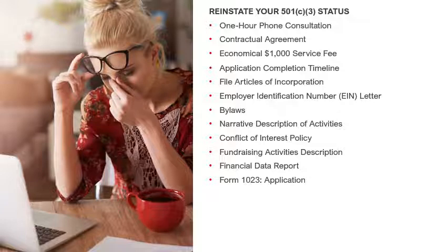Option number one is called the streamlined retroactive reinstatement option. Option two is called reinstatement within 15 months of revocation. Option three is reinstatement after 15 months of revocation. Option four is called postmark date reinstatement. Those are the four options we will discuss to help you decide which is best for you to apply for reinstatement.